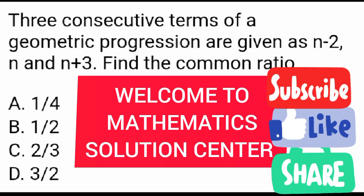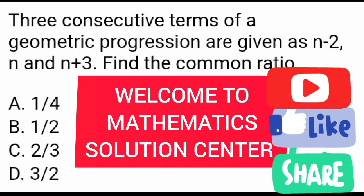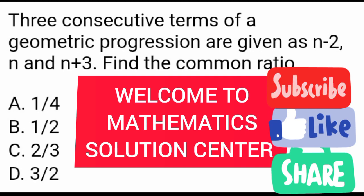Today we are going to be looking at the question that says three consecutive terms of a geometric progression are given as n minus 2, n, and n plus 3. Find the common ratio.